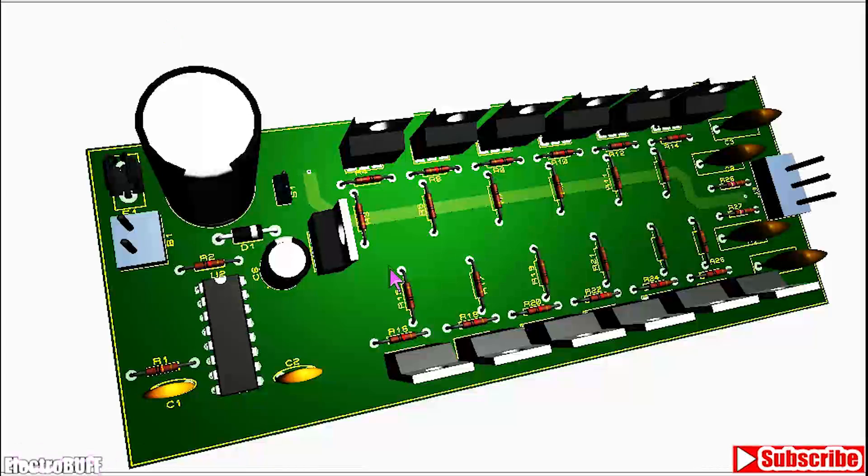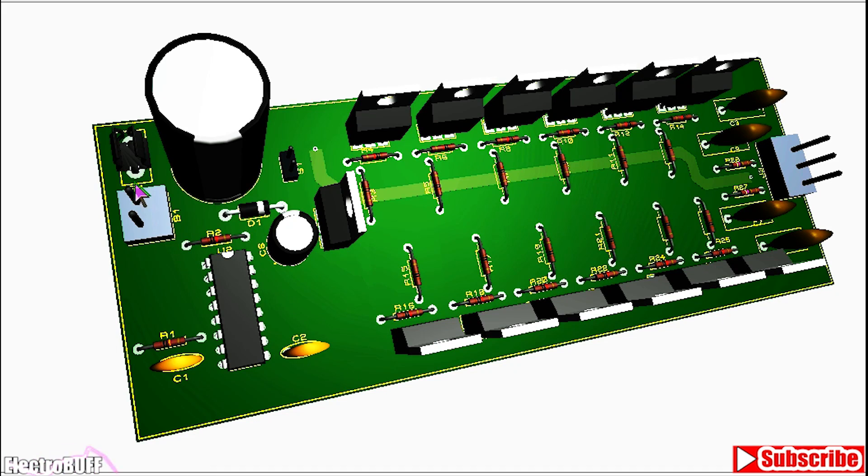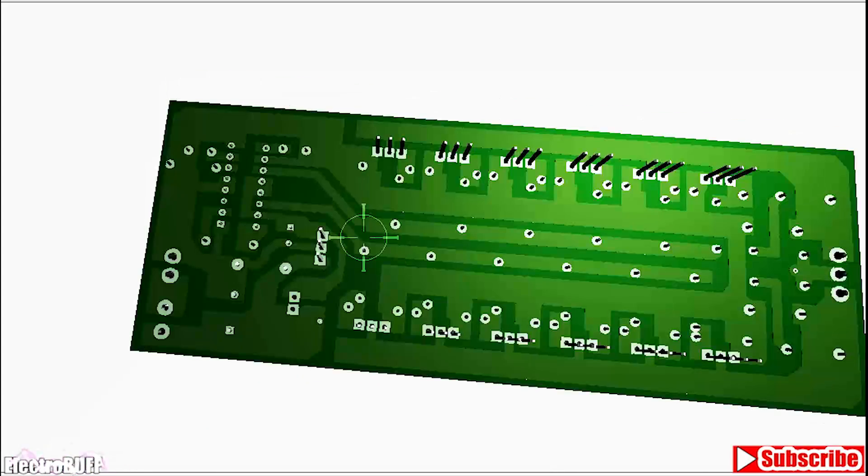And the final board will look as shown. The input, the capacitor, the fuse, the IC, regulator, the transformer connections, the transistors and the various biasing resistors and these are the snubber resistor network of capacitors and resistors as shown. And on the bottom side it looks as shown.